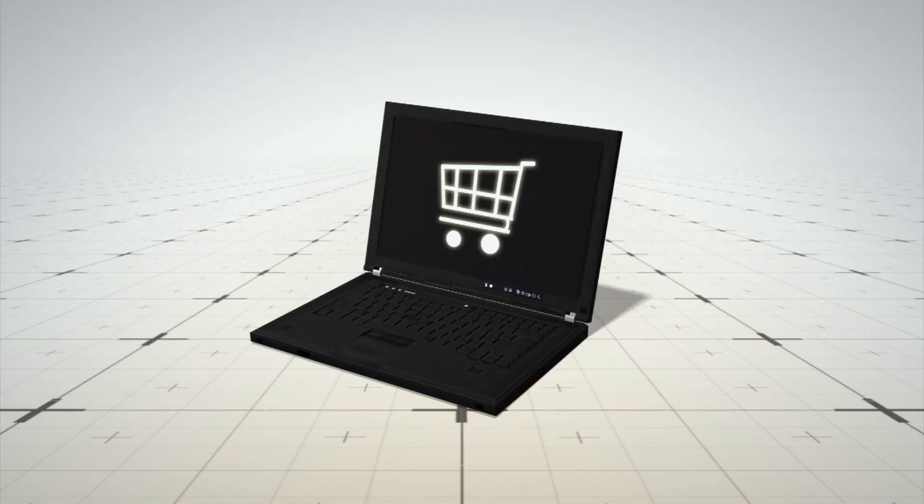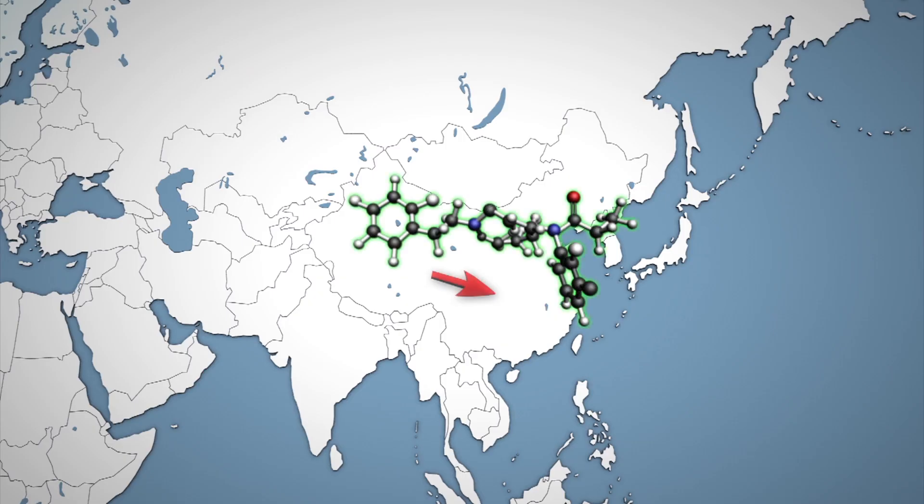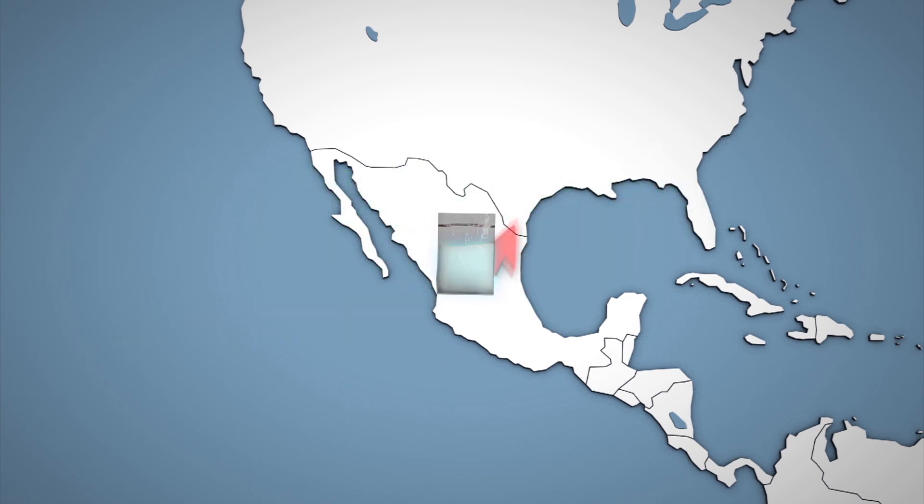Dealers often purchase fentanyl or other synthetic opioids online from suppliers in China. The US Drug Enforcement Administration says China manufactures most of the world's synthetic opioids. The drugs are often shipped to traffickers in Mexico, where they are mixed with heroin before being smuggled into the US.